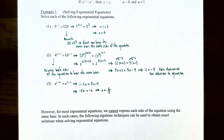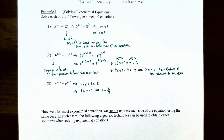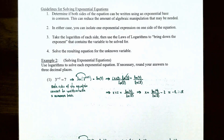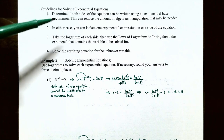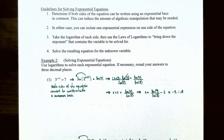For most exponential equations, you can't express each side using the same base. In such cases, we use an algebraic technique. Guidelines: first, check whether both sides can be written with a common base. Second, isolate the exponential expression on one side. Third, take the logarithm of each side and use the power law to bring the exponent containing the variable down as a coefficient. Fourth, solve the resulting equation for the unknown variable.